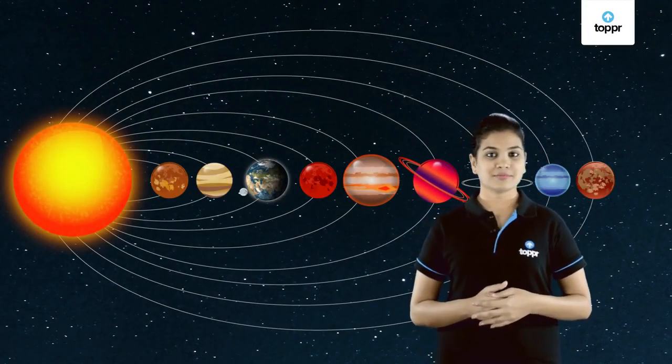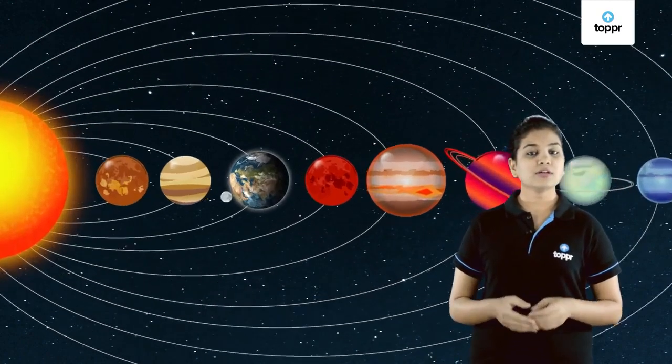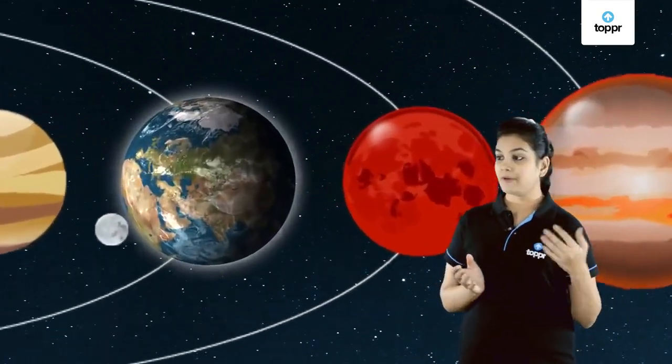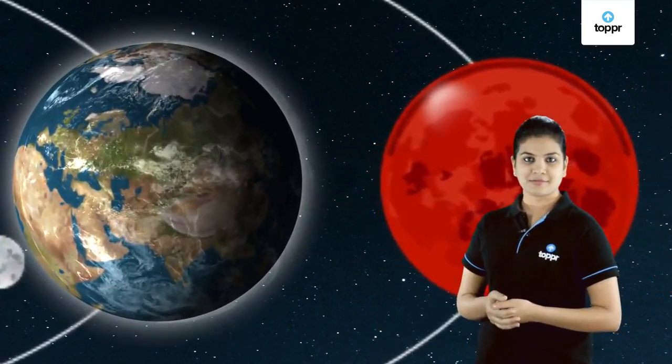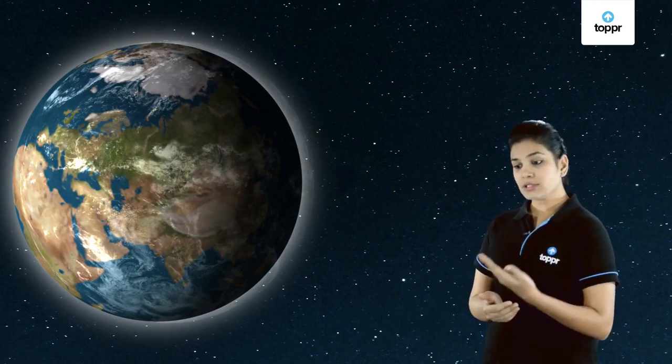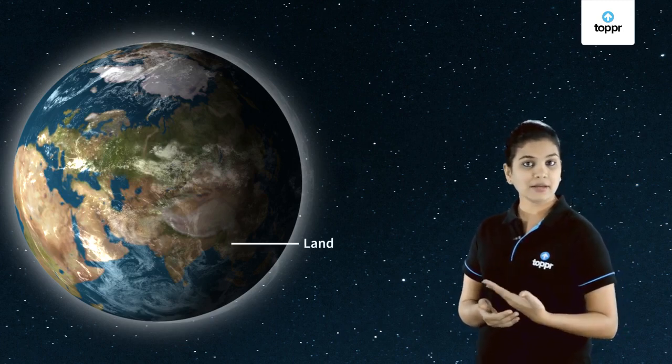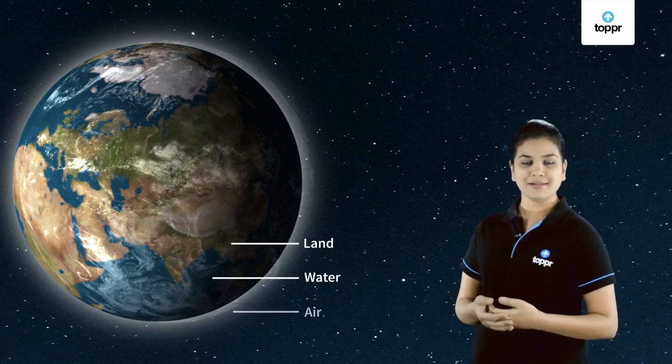Hey students, as we know earth is the only planet where life exists. But this life depends upon various factors such as the resources available on earth and the energy from the sun. So obviously the sun provides us light and heat, but what are the resources that earth provides us? These are land, water and air.